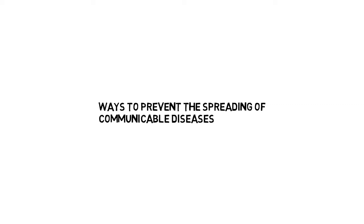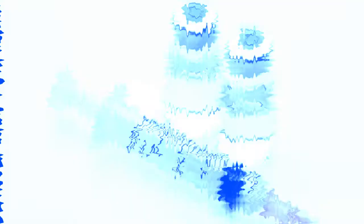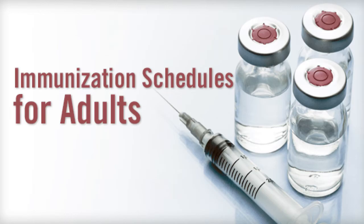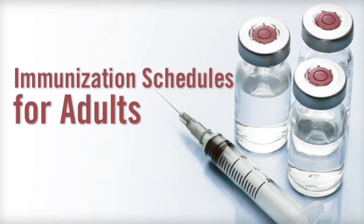How do we prevent this kind of situation? We will tell you the ways to prevent the spreading of communicable diseases. Get vaccinated! Vaccination is the best way to protect yourself and others. When a vaccine against an infection or disease is available, get it. Immunization can drastically reduce your chances of contracting many diseases. Keep your recommended vaccinations up to date.